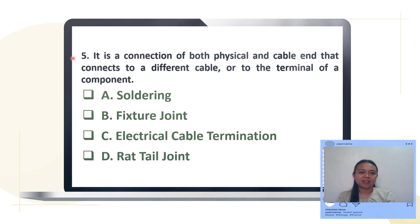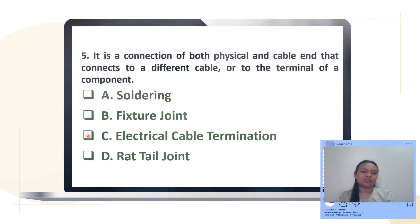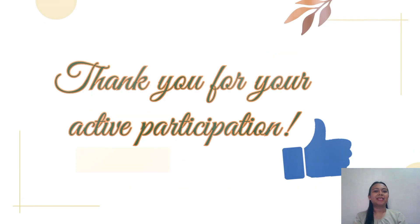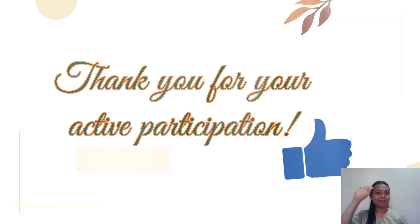For the last item, number five: it is a connection of both physical and cable that connects to a different cable or to the terminal of a component. Is it A. soldering, B. fixture joint, C. electrical cable termination, or D. rat tail joint? The answer is Letter C, electrical cable termination. Did you get it all correctly? Well done! Thank you all for your active participation in our virtual class today. See you in our next class. Goodbye!